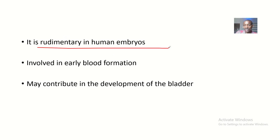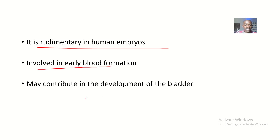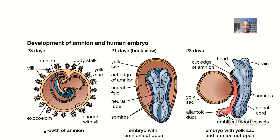The Allantois is rudimentary in human embryos — it has no use. Rudimentary means it will come and disappear, or form structures totally different from the Allantois. The Allantois is involved in early blood formation and may also contribute to the development of the bladder. That's why it is termed rudimentary.